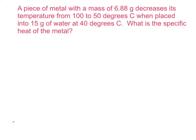This video shows how to do a thermochemistry calorimetry problem where we are looking for the specific heat of a metal, given information about both the metal and the water it's contained in, but not complete information about either one. The question reads: a piece of metal with a mass of 6.88 grams decreases its temperature from 100 to 50 degrees Celsius when placed into 15 grams of water at 40 degrees Celsius. What is the specific heat of the metal?